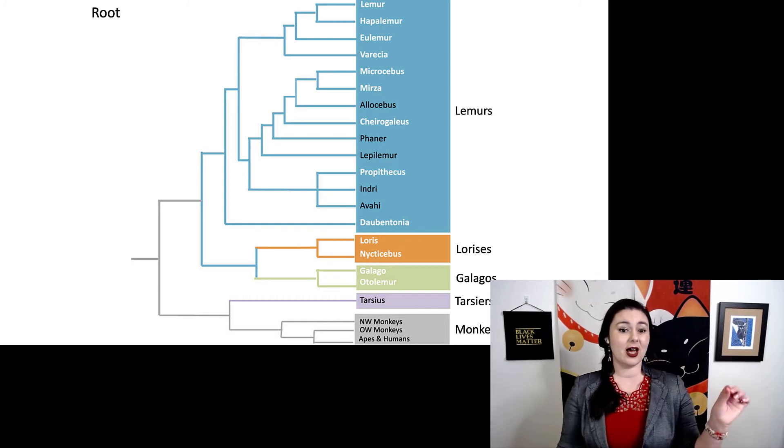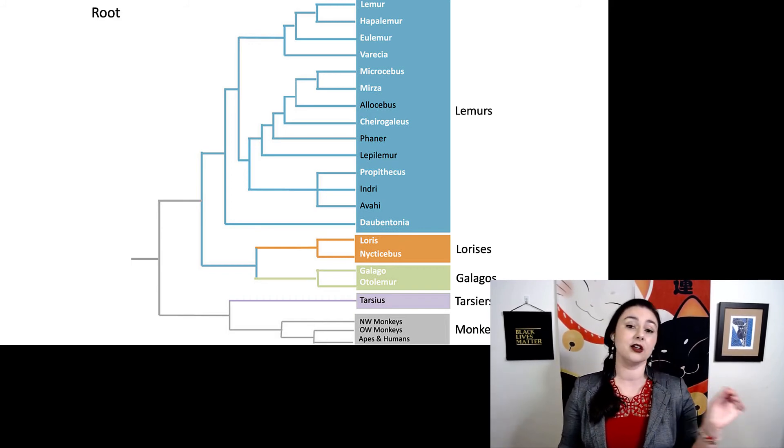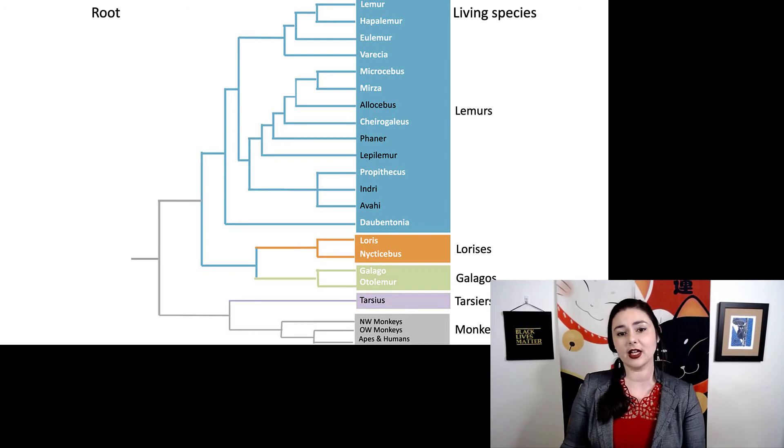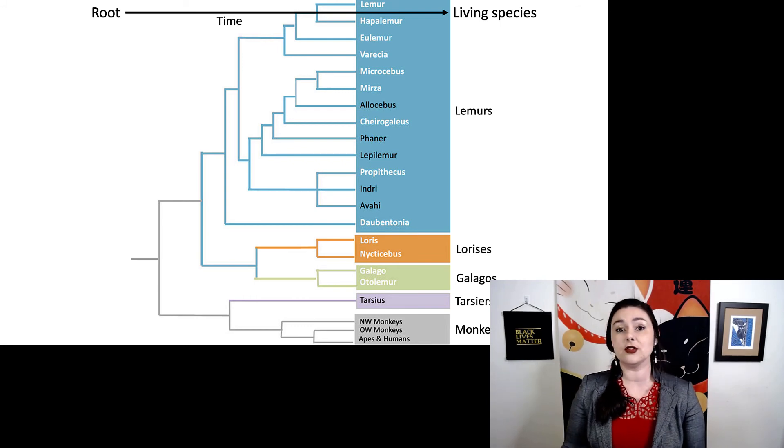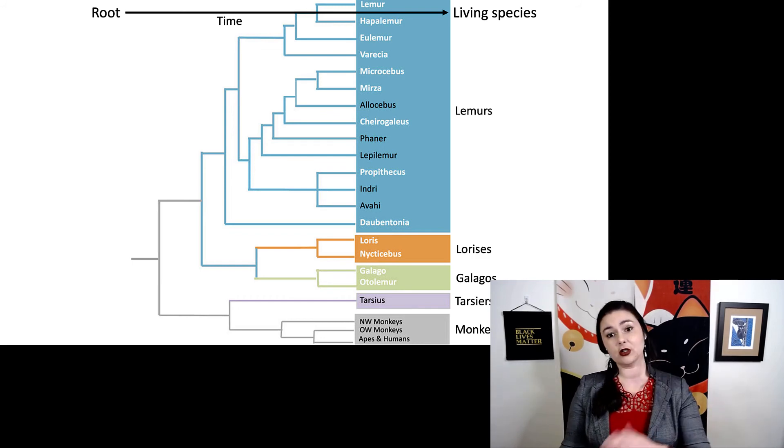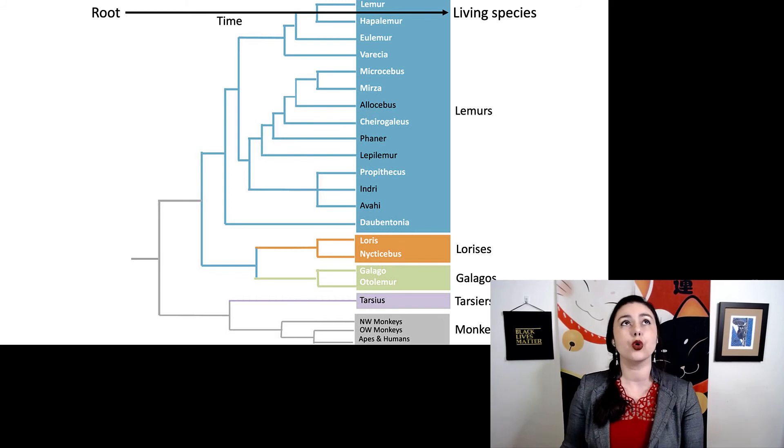So our root now, it's over on the left, and our living species are on the right, so now time flows horizontally in this tree. There is no standard way for where the time axis goes in a phylogenetic tree. They might be horizontal, it might be vertical. It's really, whenever someone's making one of these, they have to choose which way will be the best one for the data they have. And it really has to do with how many species they're trying to fit on this tree.